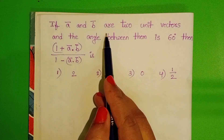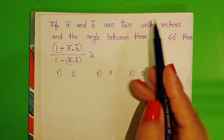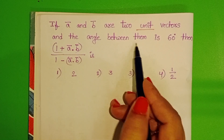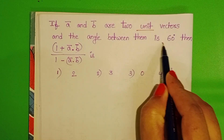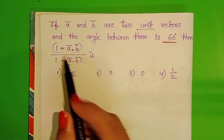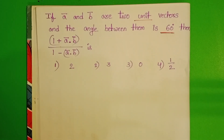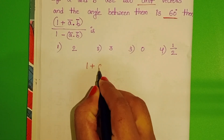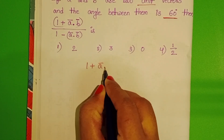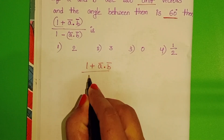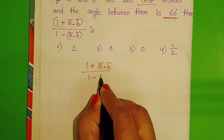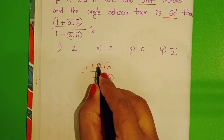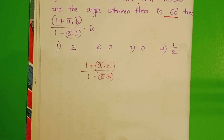If ā and b̄ are two unit vectors and the angle between them is 60 degrees, then we have to find out the value of (1 + ā·b̄) / (1 - ā·b̄).